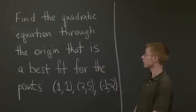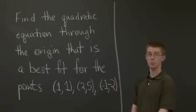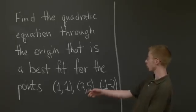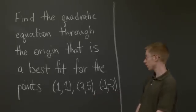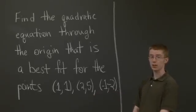Find the quadratic equation through the origin that is a best fit for these three points: (1,1), (2,5), and (-1,-2).